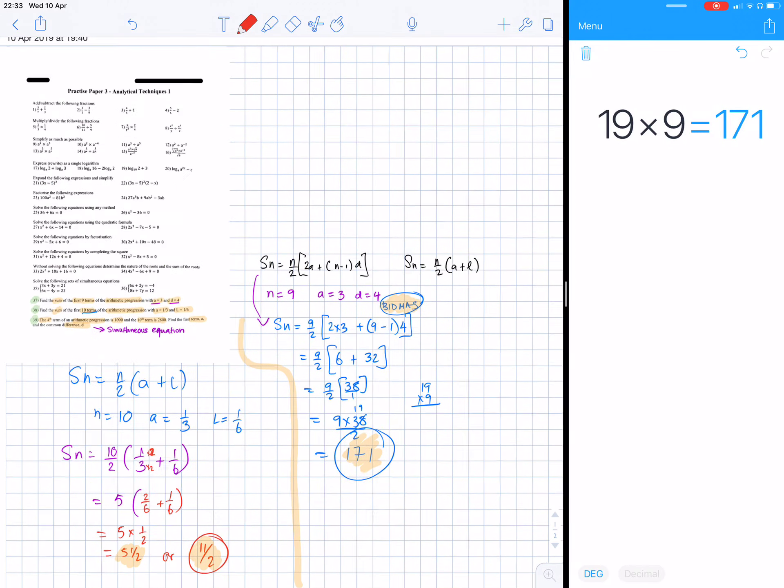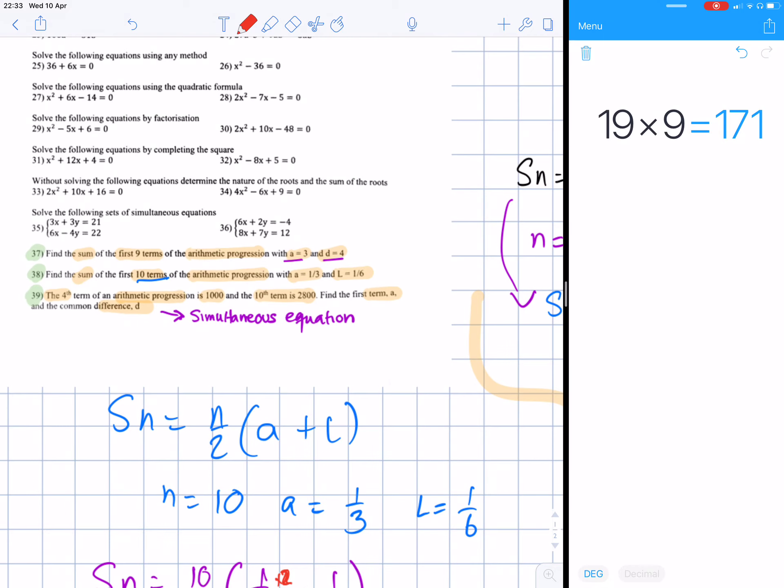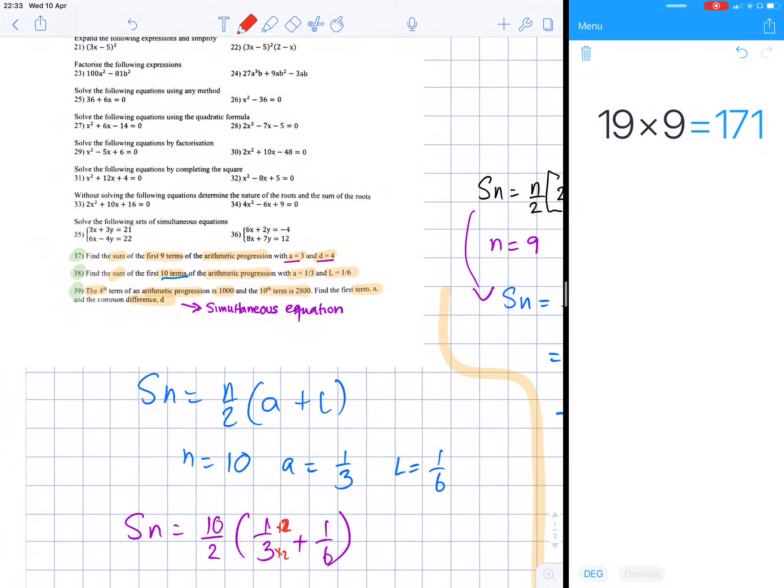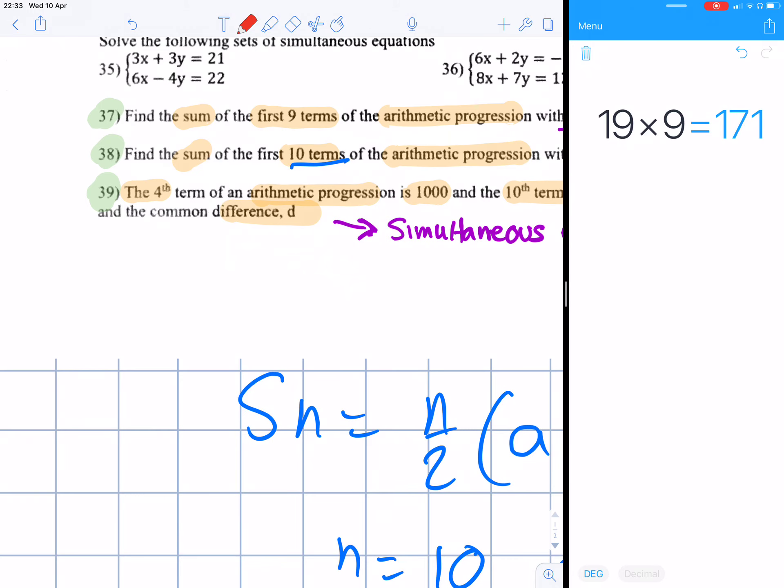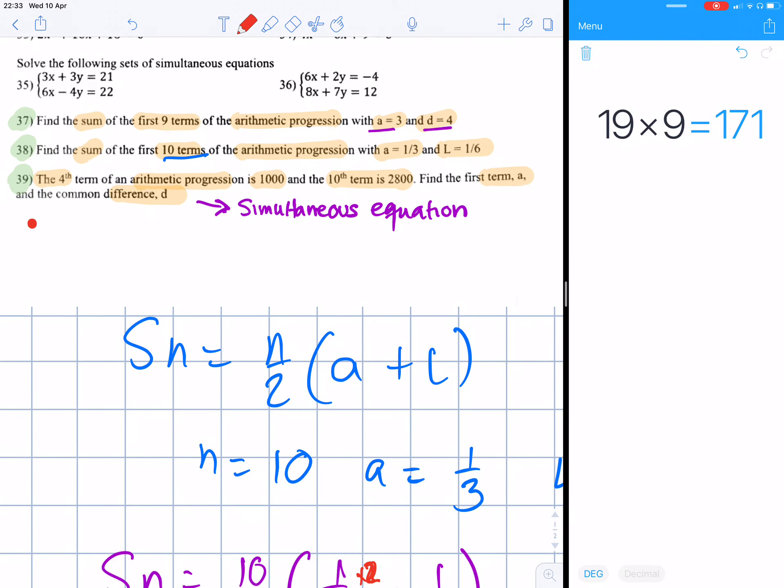So n1 equals, for the first one, the fourth term. So n1 is 4. The fourth term is 1000, which means n1 equals 4 and un or un1 is 1000. And for the other one, n2 is 10 and un2 is 2800.